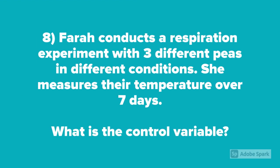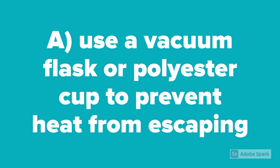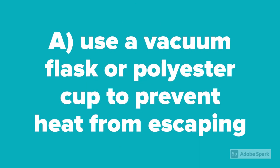Question number eight: Farah conducts a respiration experiment with three different peas in different conditions. She measures the temperature over seven days. What is a control variable? The control variable is to prevent heat from escaping, and this can be achieved using a vacuum flask or polyester cup.